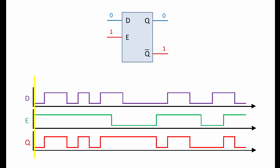At our starting point E is high, in other words the D latch is enabled. D is low, and therefore so is Q.